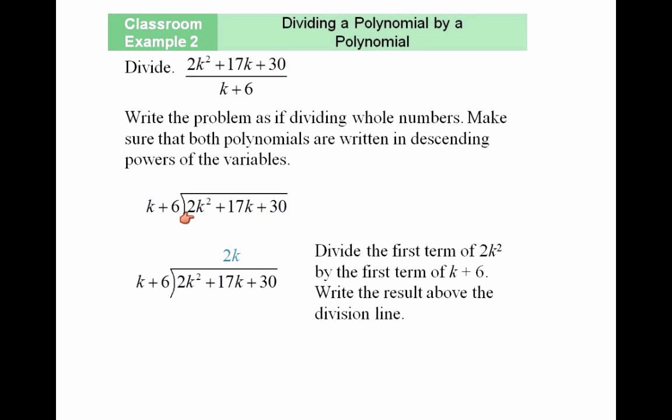Write the problem as if dividing whole numbers. Make sure that both polynomials are written in descending powers of the variables. It's very important that you sort this out. Sometimes they're not sorted. Make sure you arrange them in descending order, with the highest exponents first.